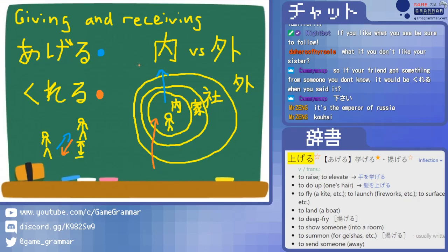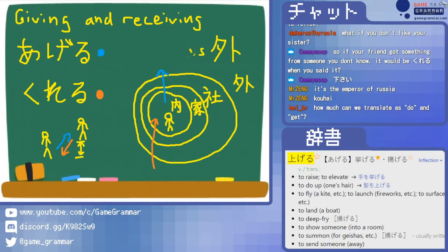I think that's actually all you need to know about kureru and ageru — there is a little bit more and we'll get into that. If you think of it like this, you can wrap your head around it fairly easily. Really let that concept of uchi versus soto sink in and you're good. The other thing to talk about is using kureru and ageru as auxiliary verbs — that is, using them with the te-form.